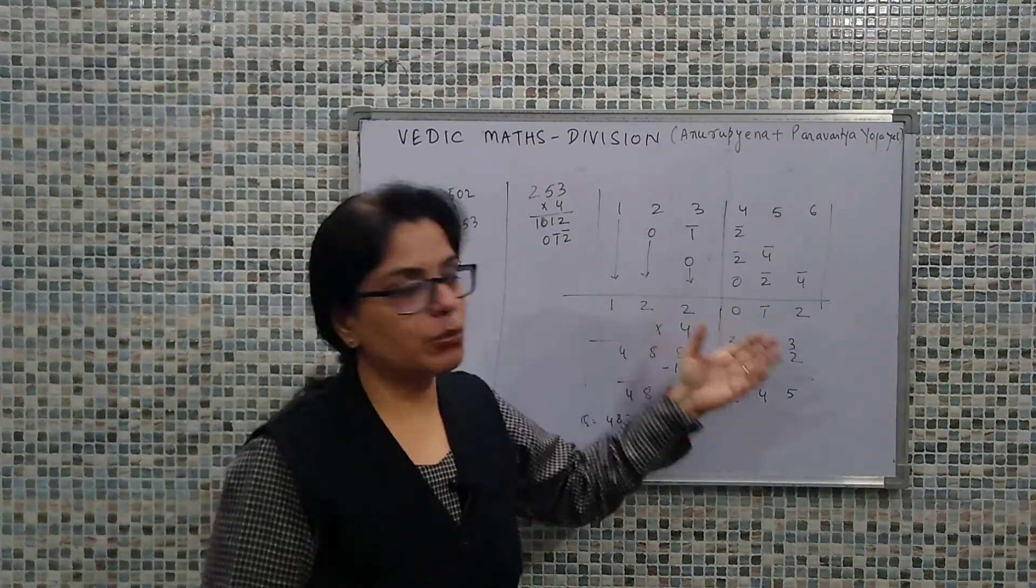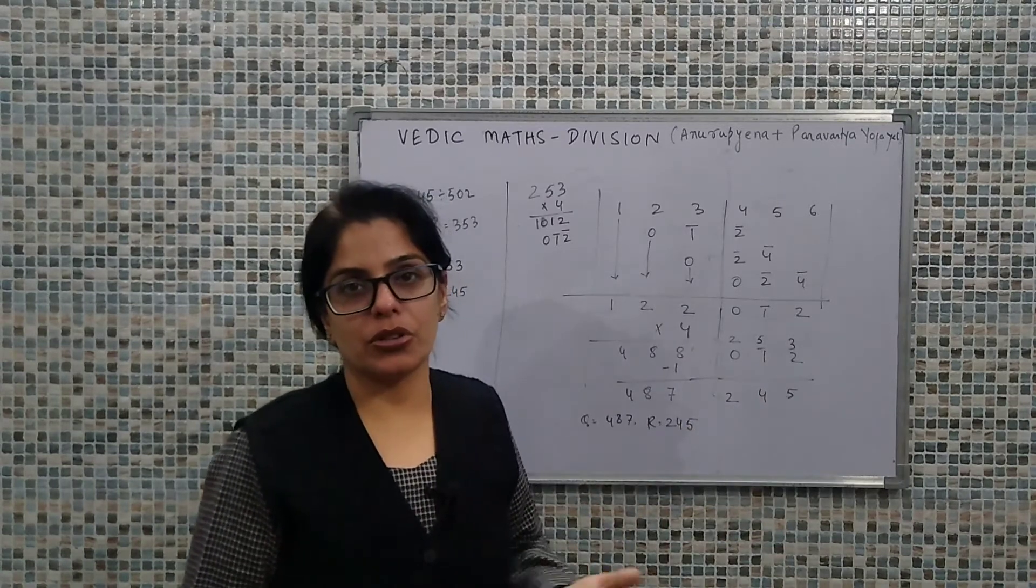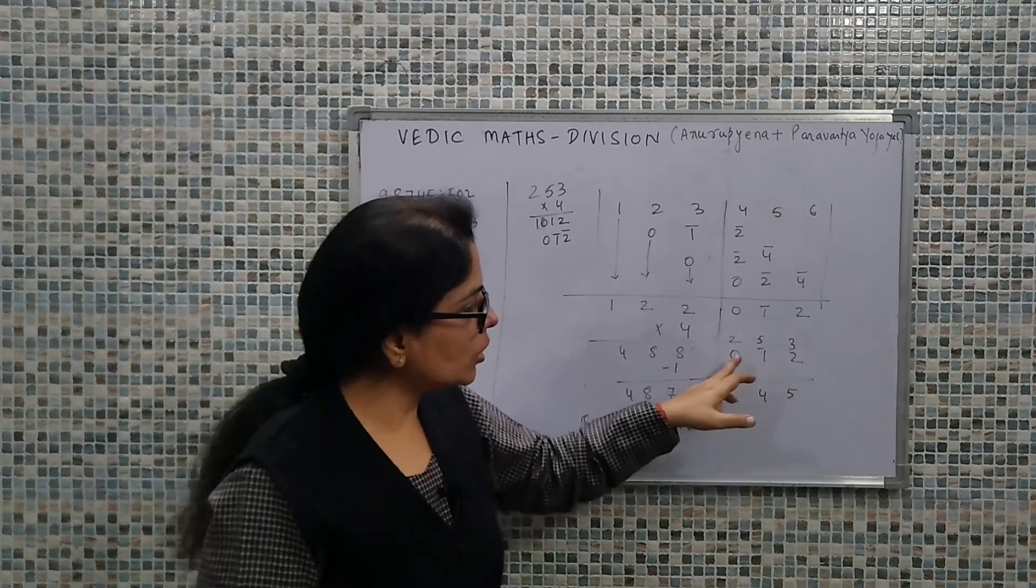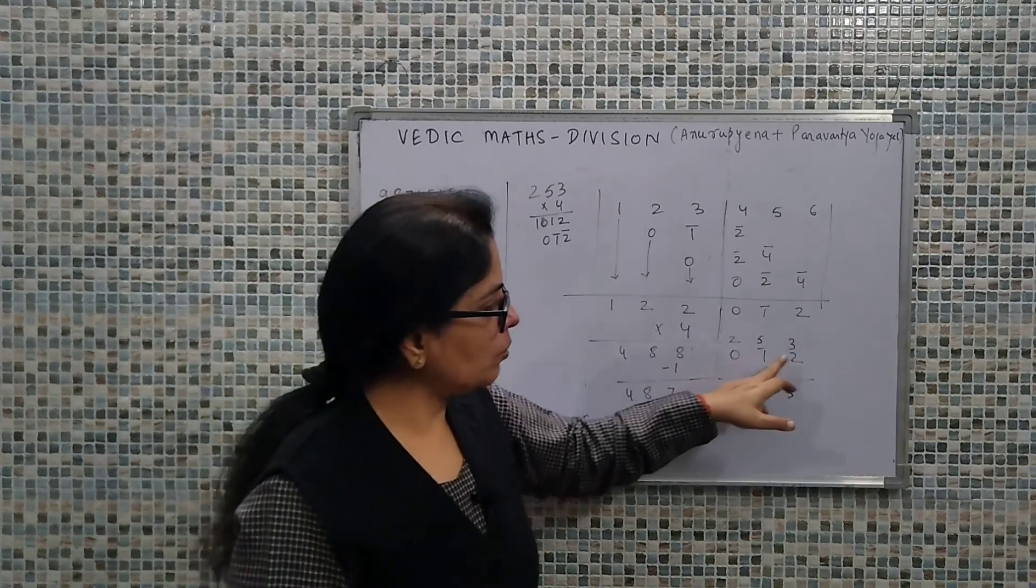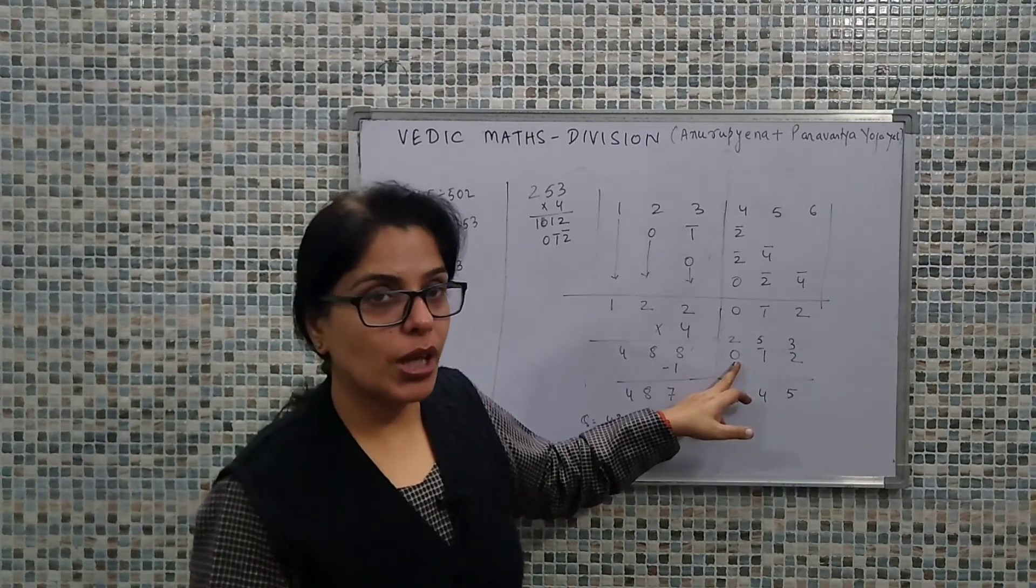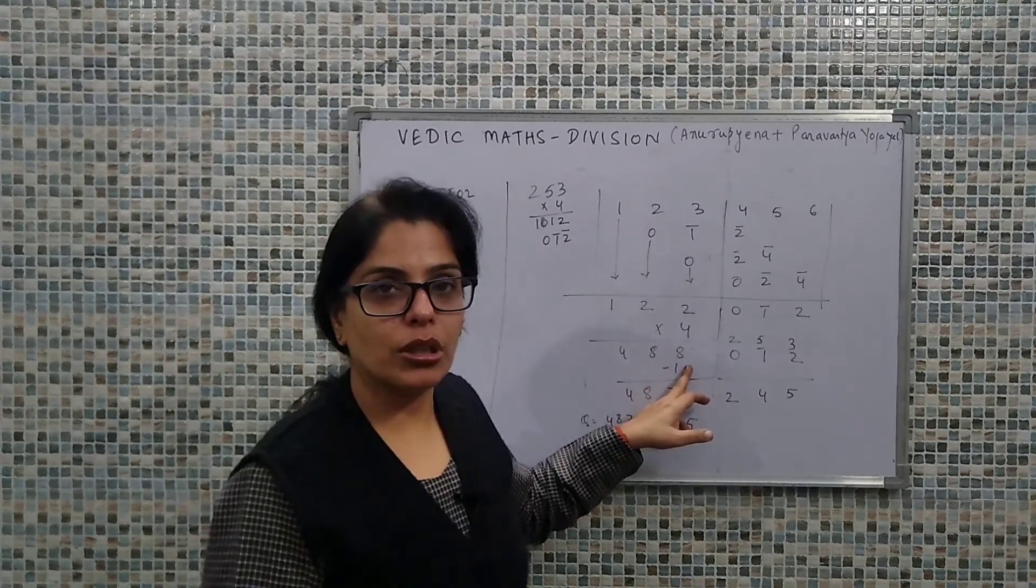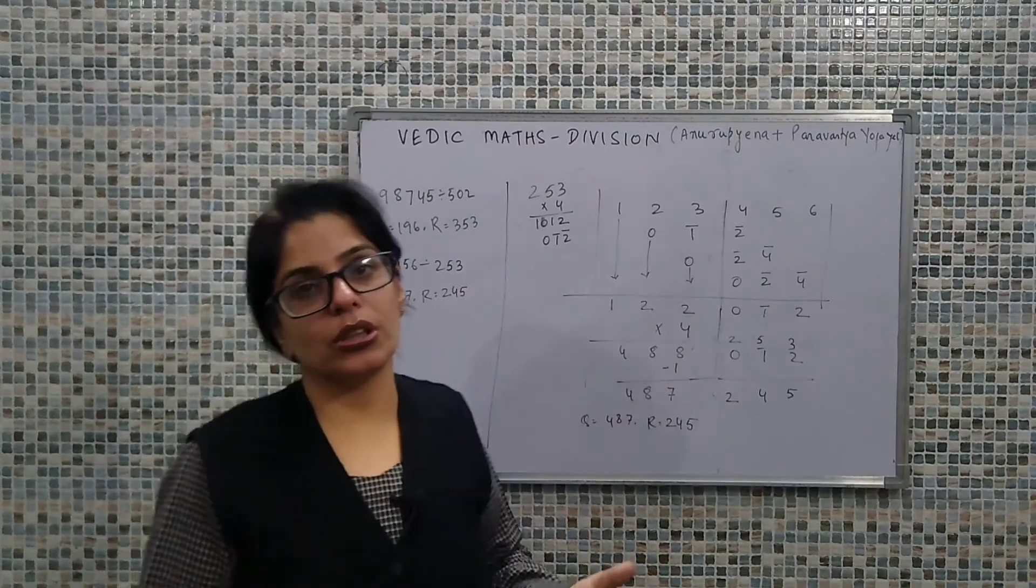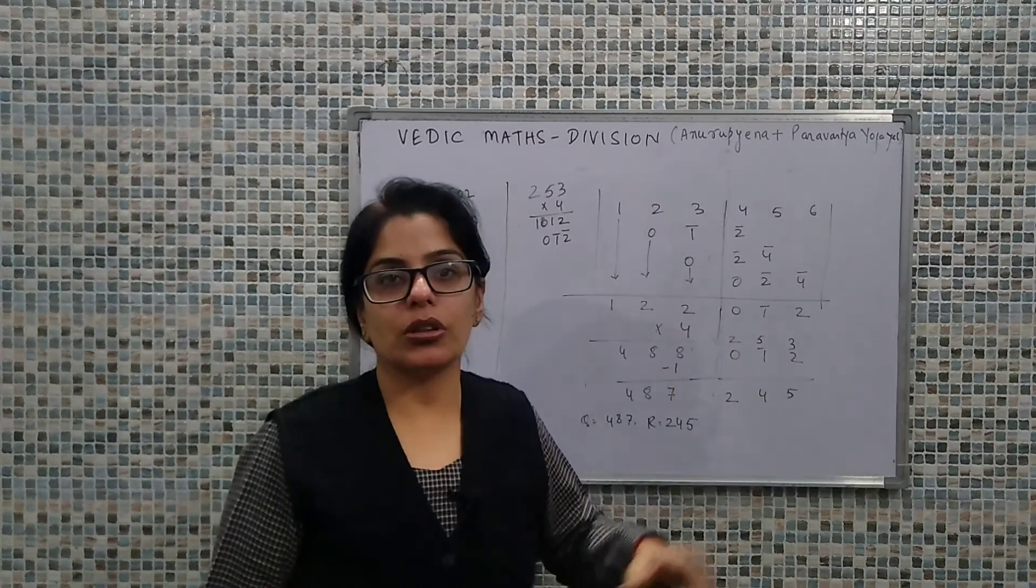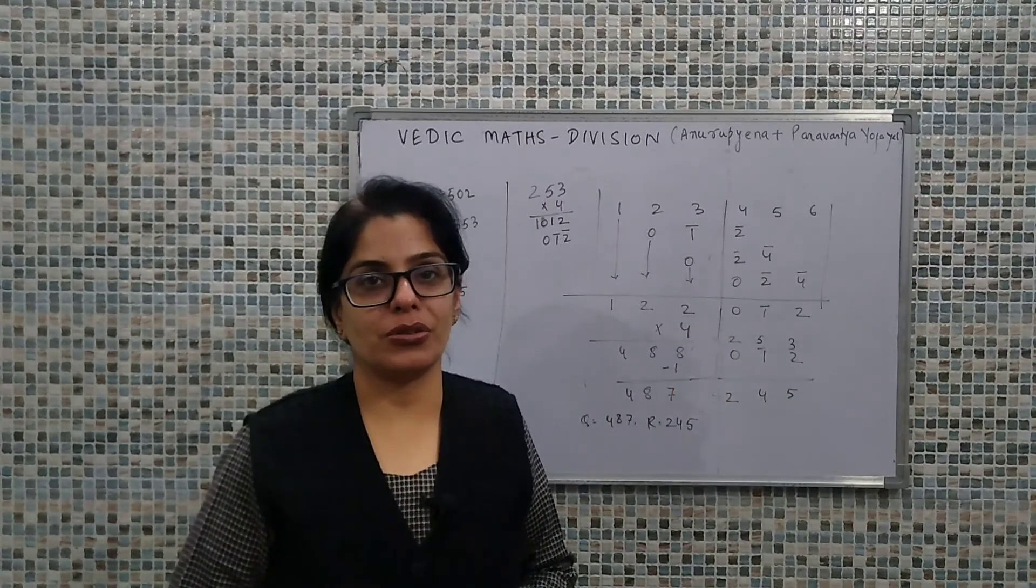And then in case our remainder is negative, we need to convert the negative remainder to positive by borrowing a value from the quotient. This can only be accommodated here because in this particular case, we had 0, 1 bar, and 2. We can't borrow from zero, so we are left with only one choice: to borrow from the quotient. So that was all about today's discussion. Thanks a lot.